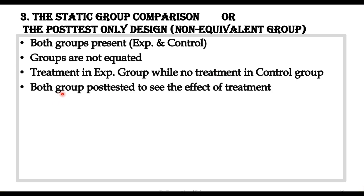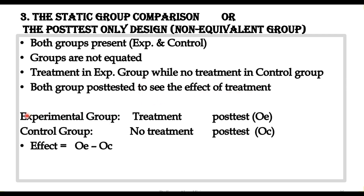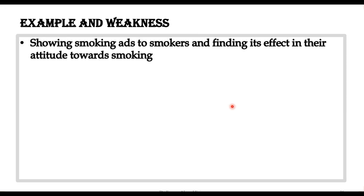Both groups are post-tested, and by obtaining the scores on the post-test we can find the effect of the treatment. The experimental group is post-tested — represented by OE — and the control group is also post-tested — represented by OC. The effect of treatment can be found by subtracting OC from OE, so: Effect = OE minus OC.